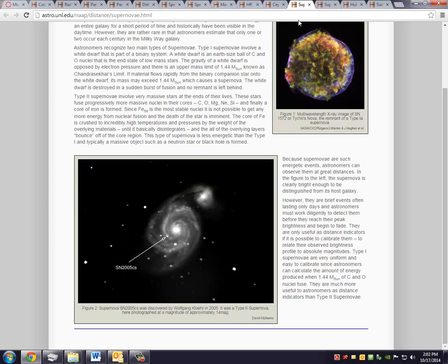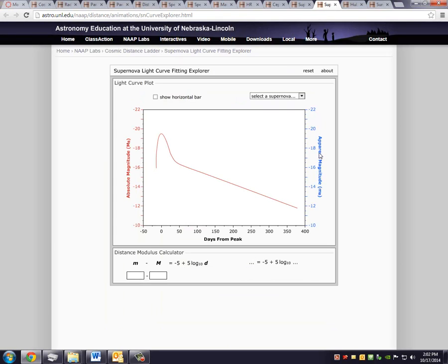Now moving on to the supernova. A supernova is an exploding star. You can read the background to get more information about what supernovae are. But to actually use the supernova light curve fitting explorer, I will work through the example in the student guide, this is the bottom of page 6. They want us to load the data for supernova 1995D. And notice we see it's way down here. It's a type I supernova, so we're going to make it match the typical curve, or the typical profile for a type I supernova.